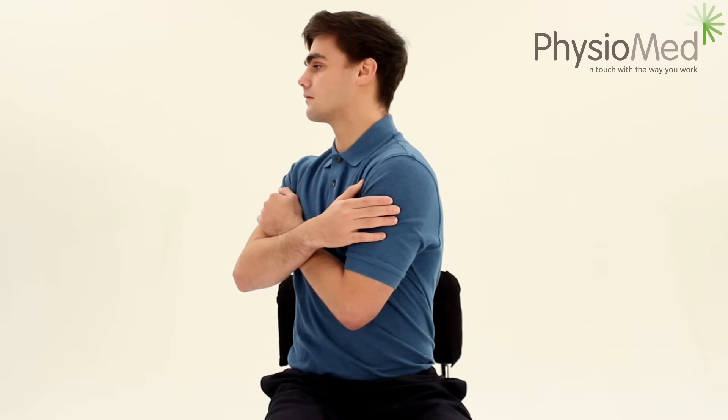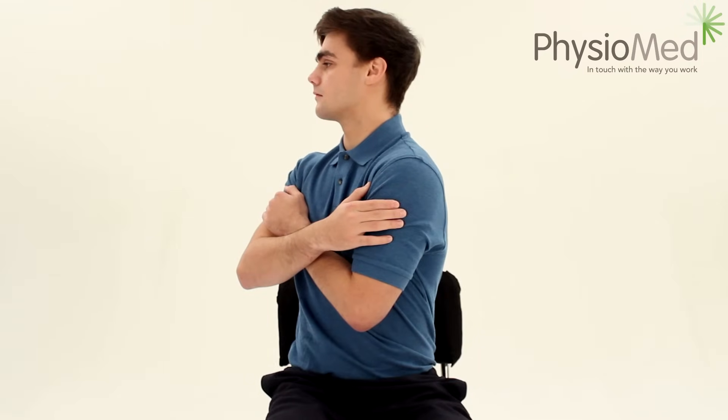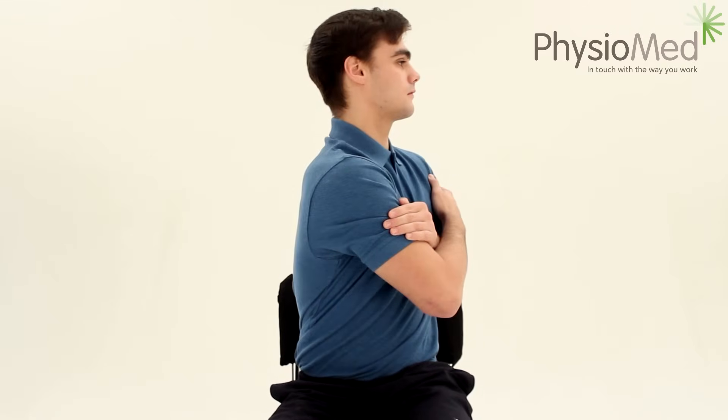Sit up straight with a slight curve in the base of the spine. Cross your arms on your chest and then slowly twist the trunk to either side. Repeat this 5 times on each side so 10 rotations in total, 2-3 times per day. By keeping this part of your spine flexible it can reduce the stress on the neck and again reduce the likelihood of pain in this area.